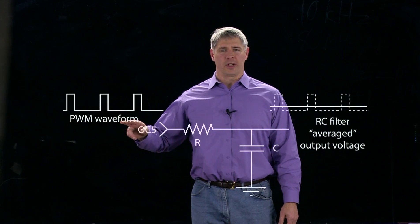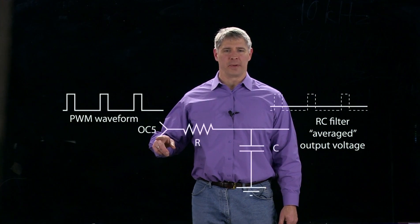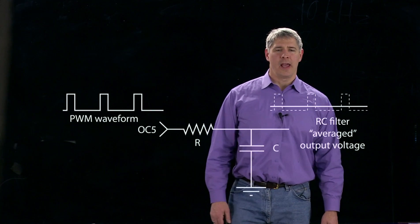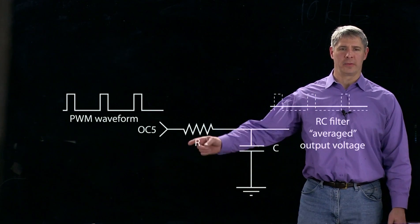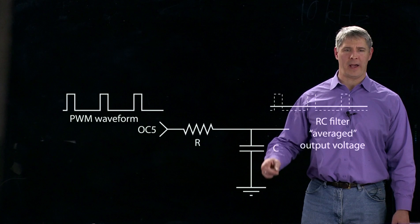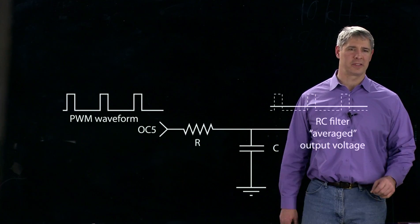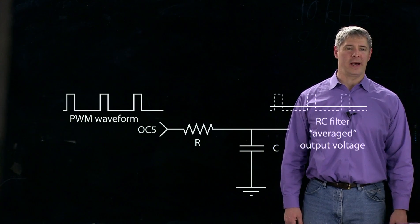So here's a PWM waveform coming out, in this case, from output compare module 5, and if we pass it through an RC filter here, we have a resistor and then a capacitor to ground. So this is the simplest type of passive low-pass filter.